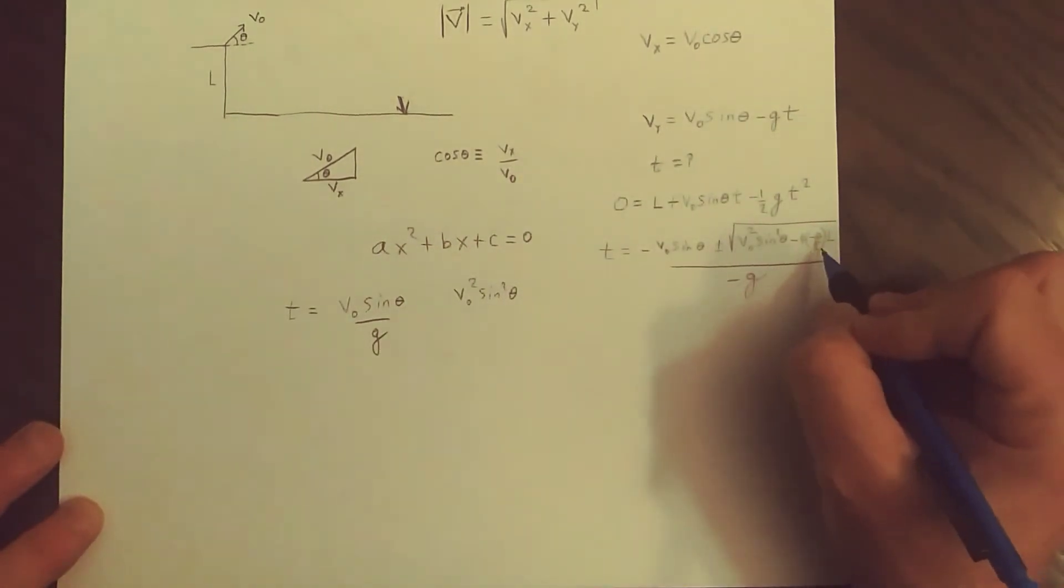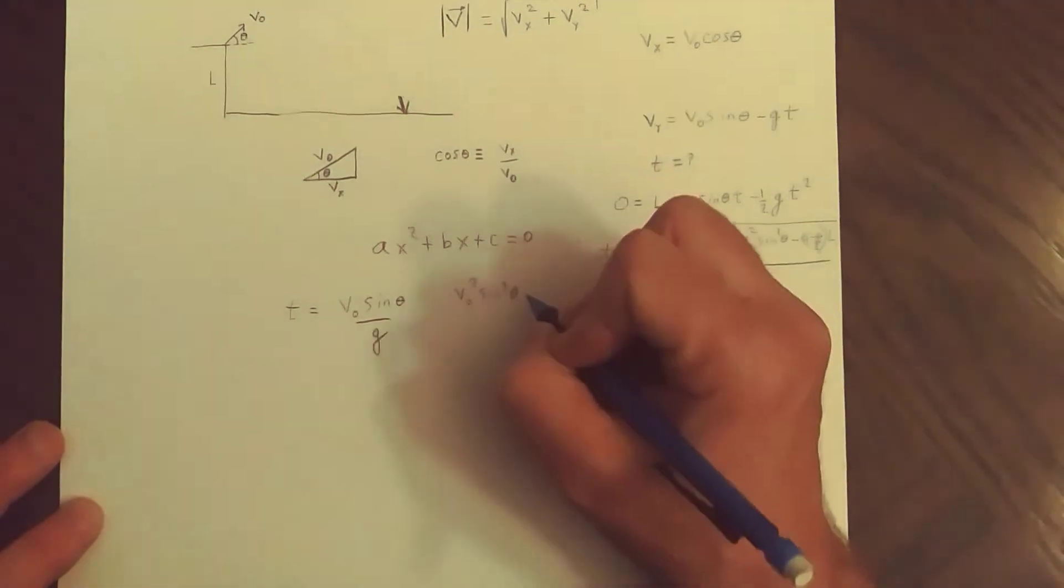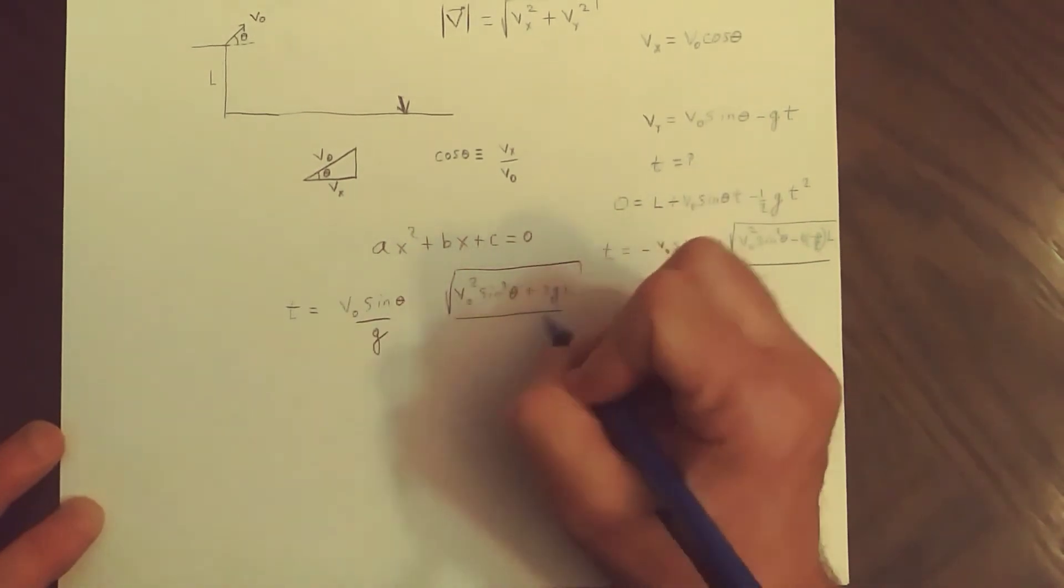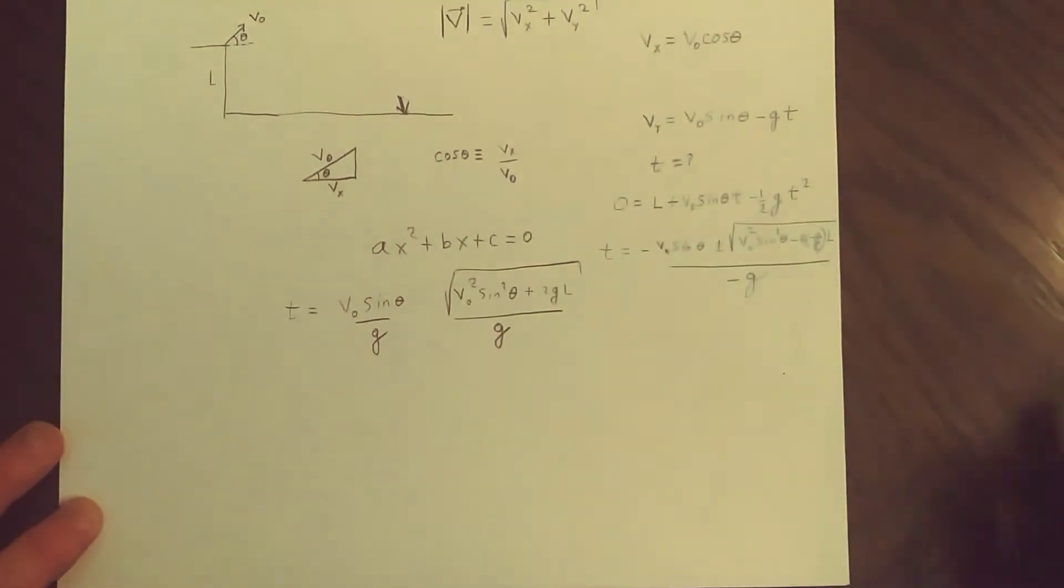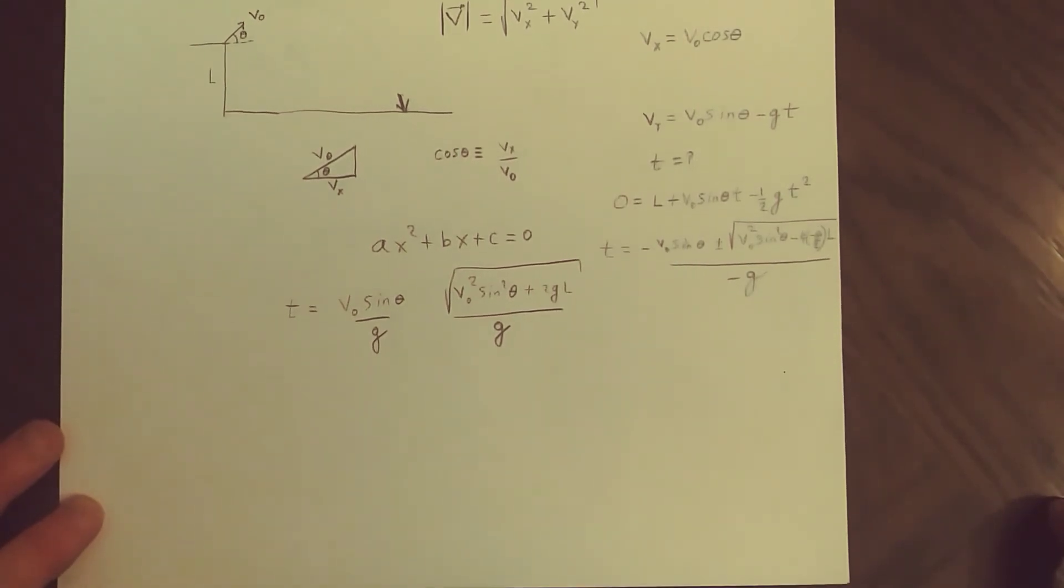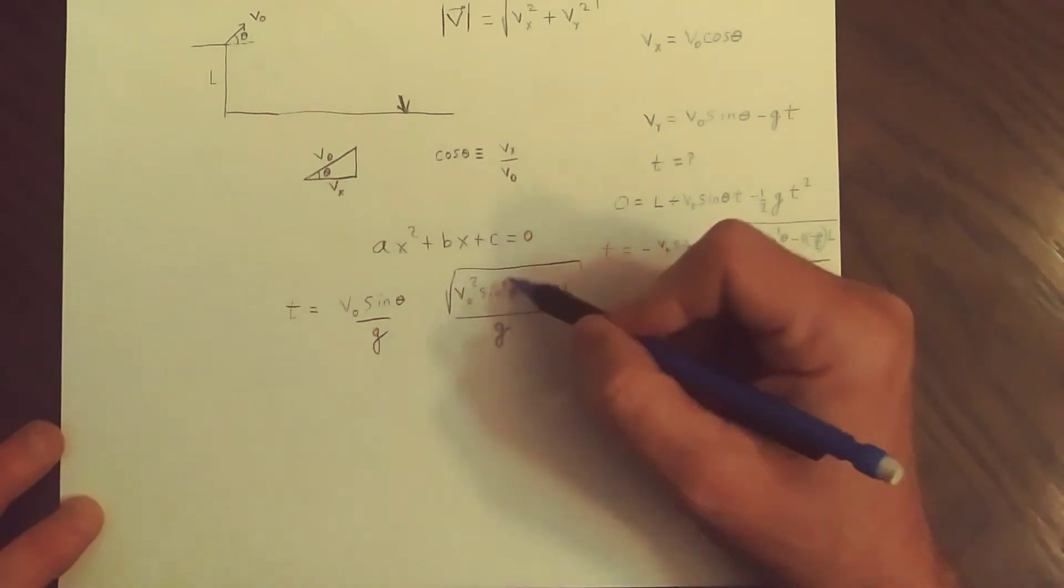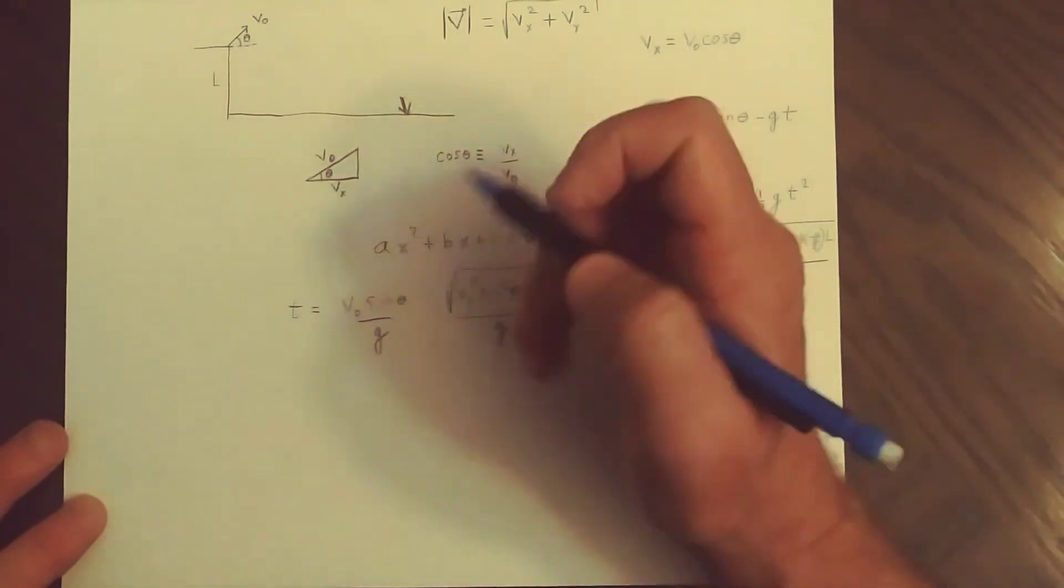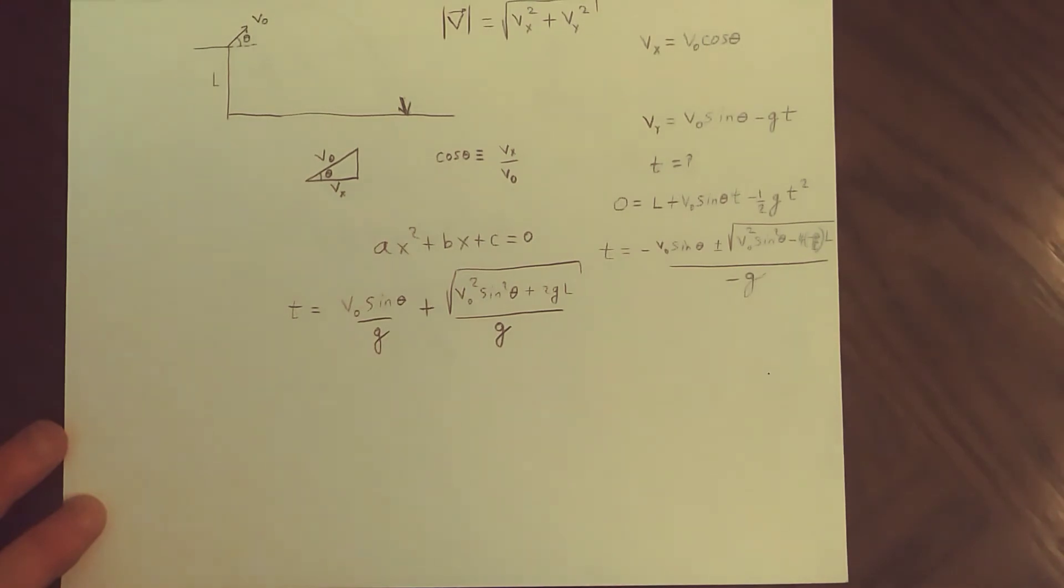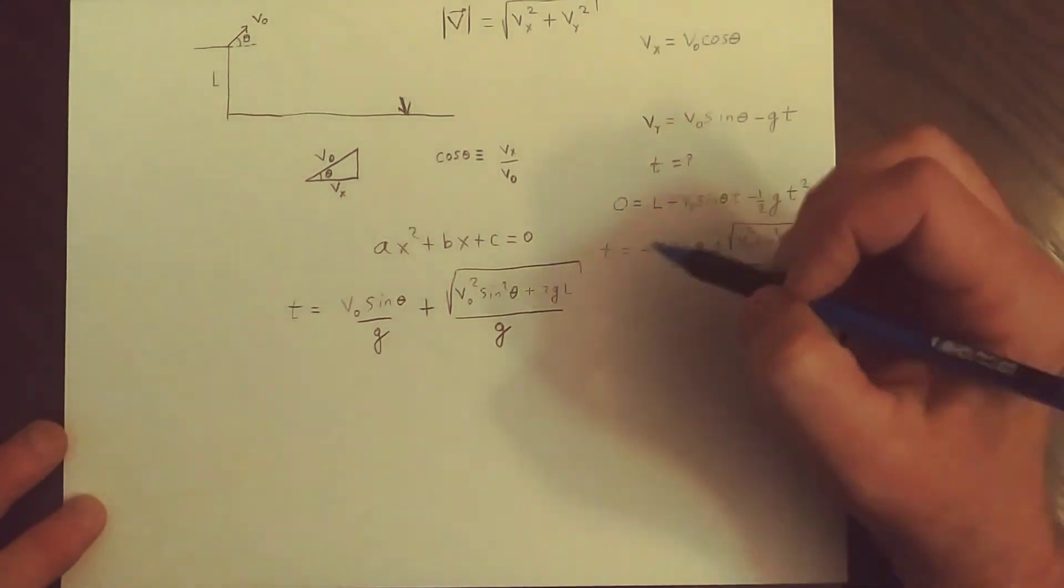And then we have to decide what to pick, right? Is it going to be a positive or a negative term that involves the V naught squared sine squared theta? We have an overall plus sign in here so we get plus two GL square root and that gets divided by G. Do we want a plus or a minus? And the answer is that since we want a positive time and this whole thing is larger than this one, we have to choose the plus time.